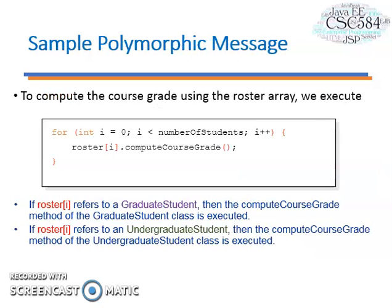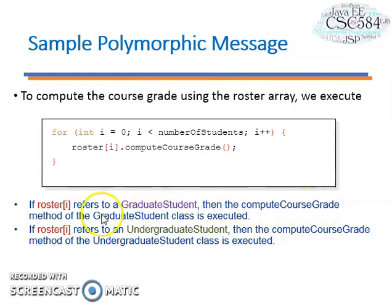Next, let's look at how we can access a specific object of student. For this case, we can use a for loop structure to access the object. If roster[i] refers to a graduate student, then the computeCourseGrade method of the graduate student class is executed.